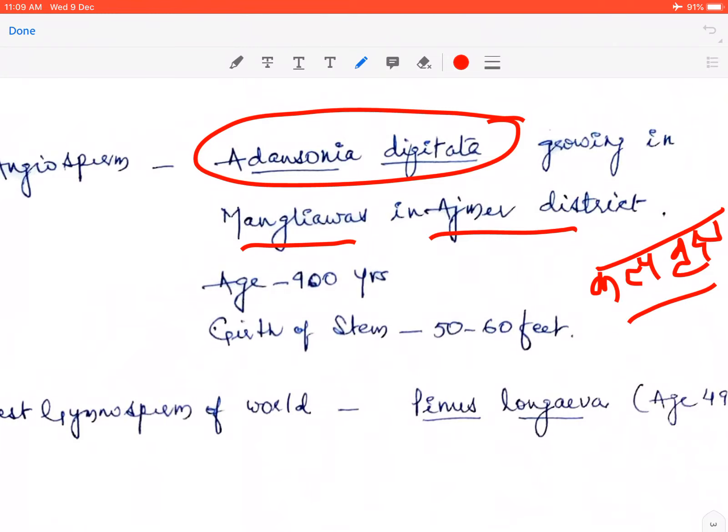Ye iske andar jode lagi hui hain jinhe ek in raja aur rani kehte hain, do sanrakshit ye kalp vriksh hai. Aur jinki age karib 900 years ki karib mani gayi hai. Aur agar inke tane ki prakhand gher ki baat karein, toh iske karib 50 se 60 foot ka ghera hai. Toh ye local jo humara tree hai and very famous jo ye trees ka jo joda hai. Kalp vriksh iska aap sabhi ne naam suna hoga kyunki ye local humare Ajmer zile mein hi paaya jata hai Mangliawas mein.